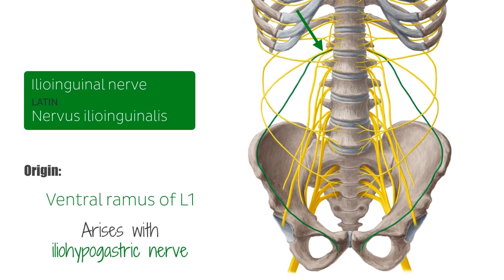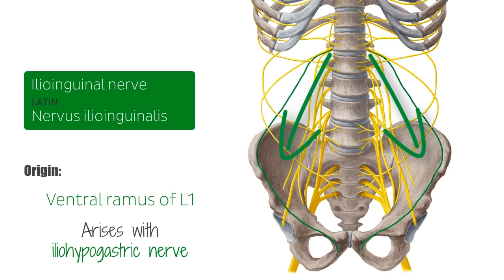At the lateral edge of the psoas major muscle, the iliohypogastric and ilioinguinal nerves divide, as we can see in this image. We can't see the psoas major muscle here, but we can imagine the muscles coming down on either side just here.